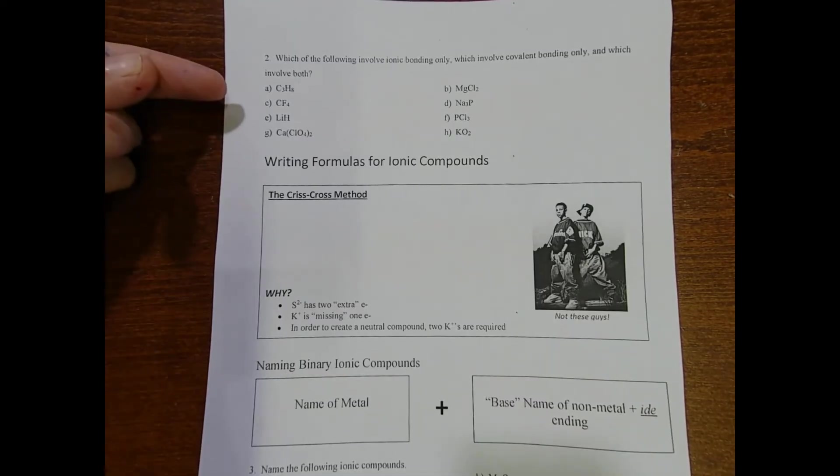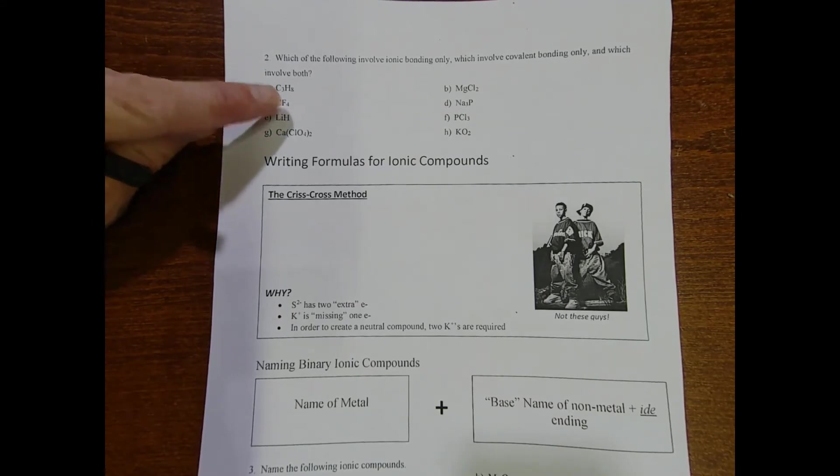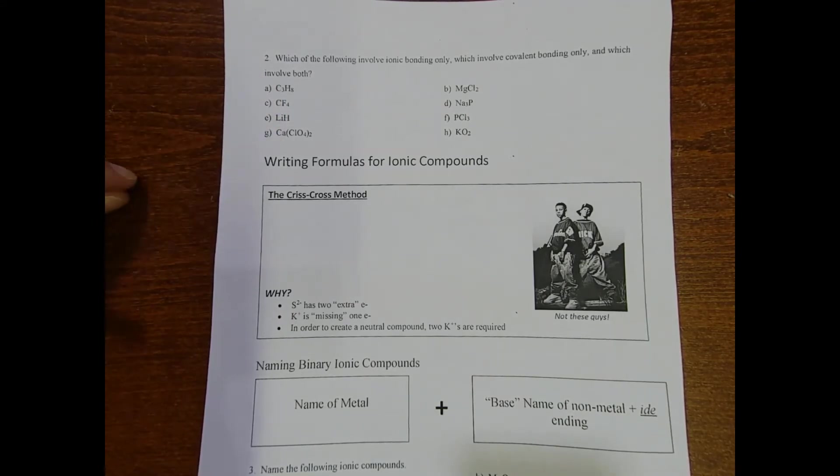In question 2 we're asked to identify a compound as being ionic, covalent, or potentially a little bit of both. In letter A we have carbon and hydrogen. The key to identifying something as being ionic or covalent is figuring out whether it's a metal or a nonmetal.